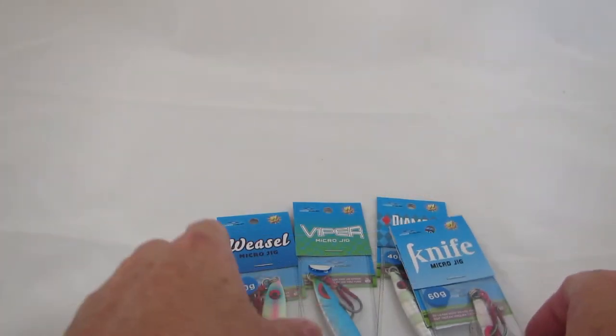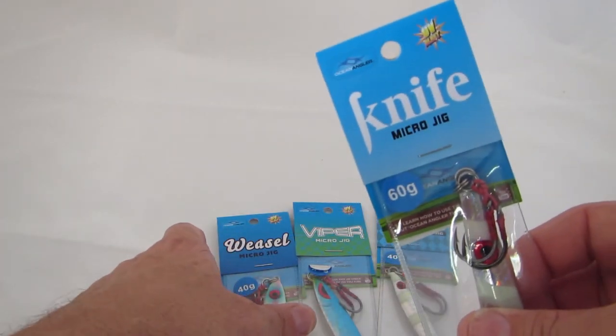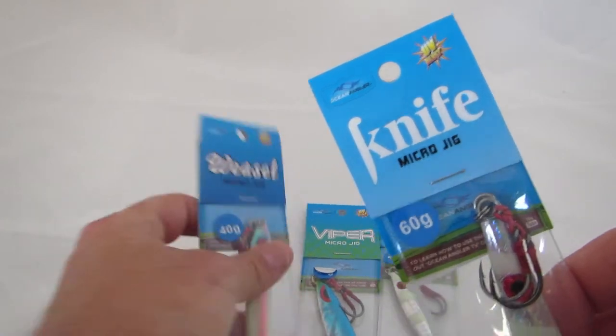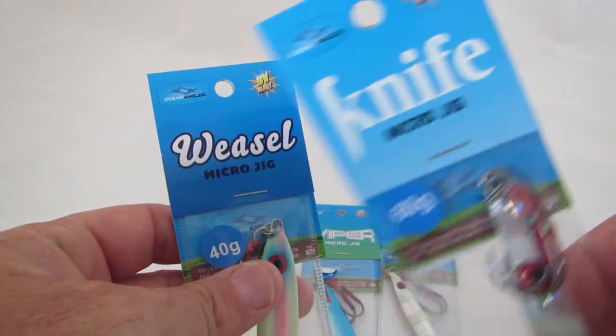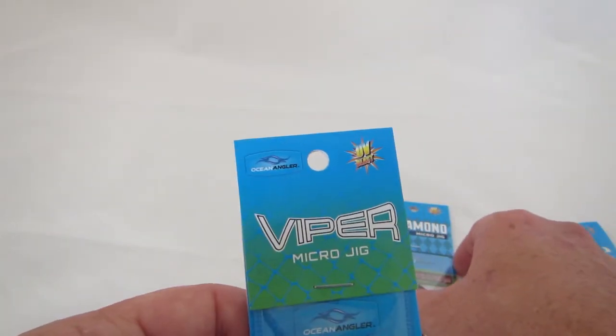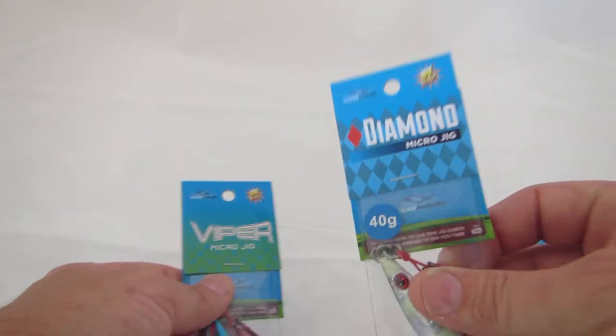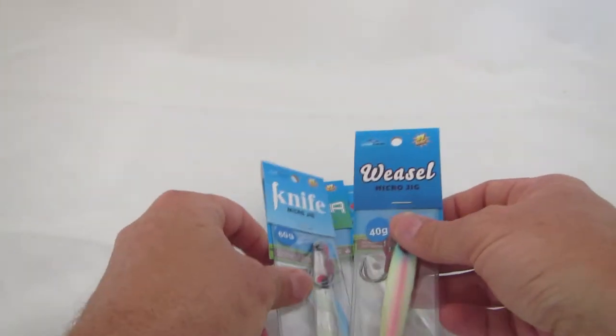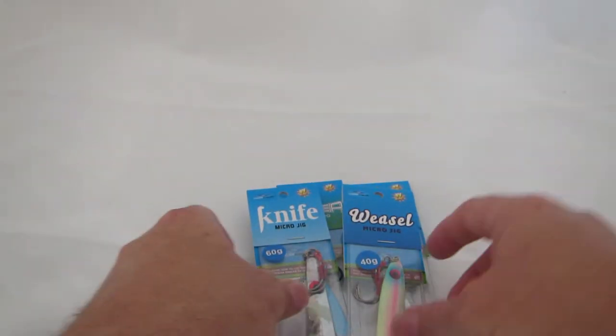Okay, getting quite a few people asking why there's so many different shapes of the Ocean Angler microjigs. There's a knife, a weasel, a viper, and a diamond, and they've all got different actions on the fall. So let's just go through them one by one.